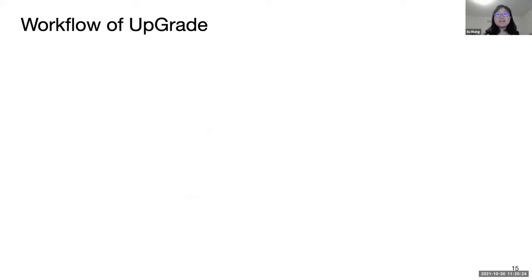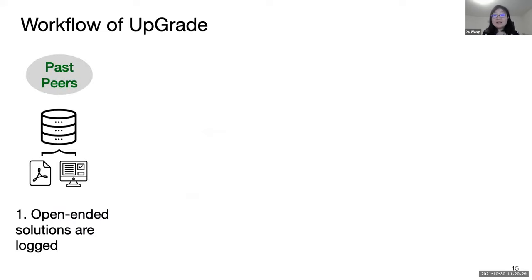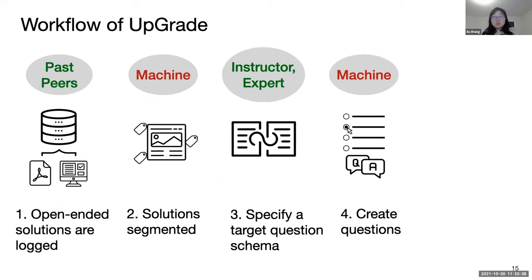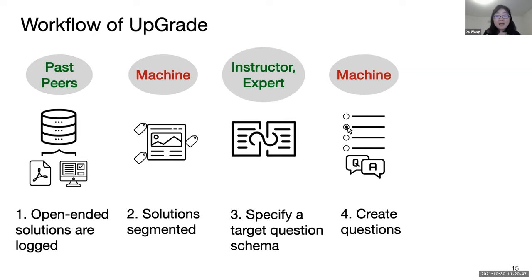Here is an overview of how UPGRADE works. UPGRADE leverages the capabilities of both humans and machines: past students function as a crowd that offers a data source, and we use machines to segment, select, and reorganize examples. In this process, we elicit expert feedback on high-level planning, and finally the expert validates the questions for quality control. This workflow enables UPGRADE to quickly produce good quality multiple choice questions at scale.